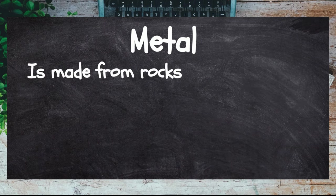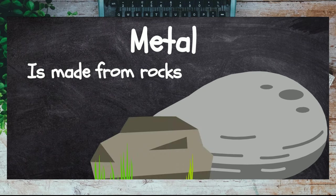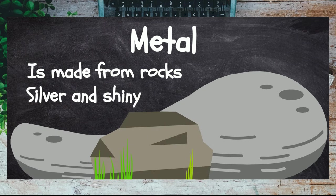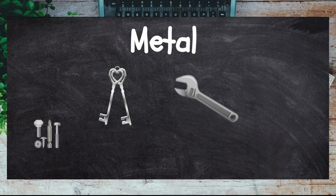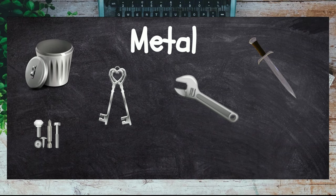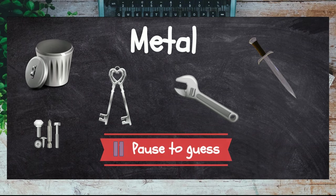Metal is made from rocks. Metal is silver and shiny; it is very strong but can be molded when heated, so it is good for being made into keys and tools. Other things that can be made out of metal are knives and rubbish bins. Can you think of anything else that is metal?